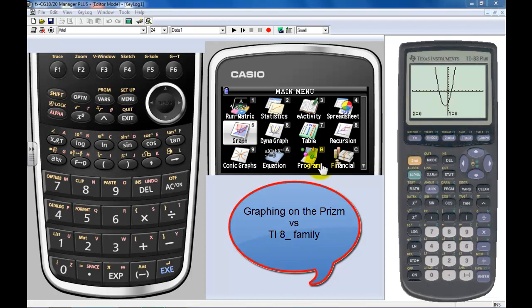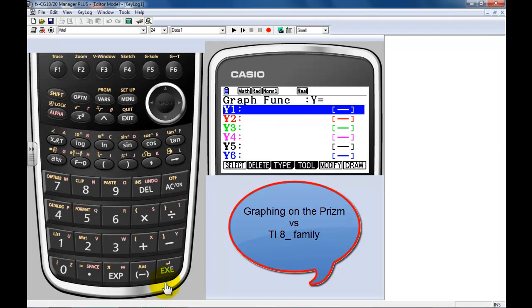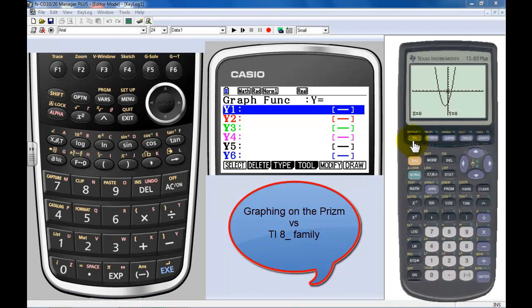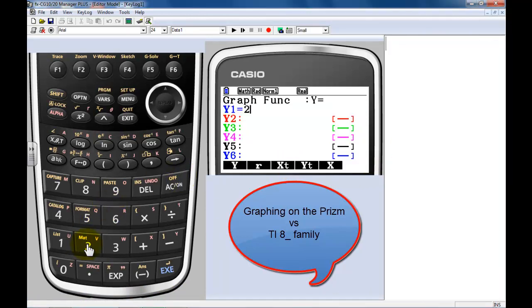On the prism, I'm in my main menu here. Notice there's a menu item number 5 to graph, so I go into number 5. I could either press the number 5 or just go to number 5. I'm going to type in that same equation, 2X squared, plus 3X, minus 5.